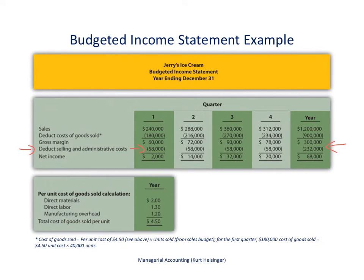The other information on the income statement comes from the other lectures. If you look at the sales budget video, you'll see where those numbers come from. We're projecting $240,000 in sales revenue for the first quarter, $288,000 for the second quarter, and so on. Collectively for the year, we expect $1,200,000 in sales.